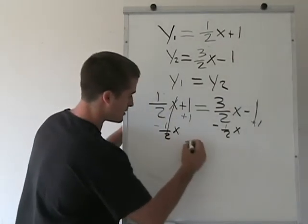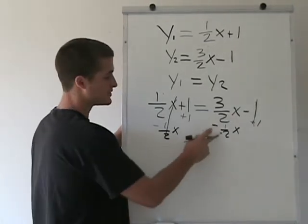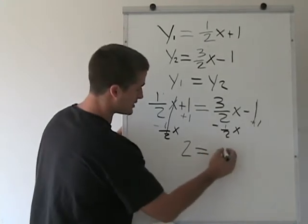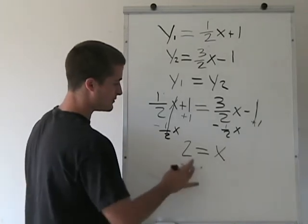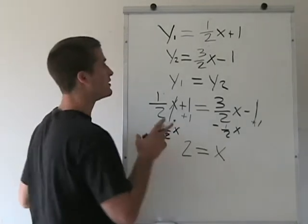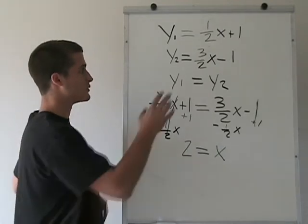1 plus 1 is going to be 2 equals 3 halves x minus 1 half x is just x. So it's 3 halves minus 1 half is 1. So you have 2 equals x. So now we know the x value where these two equations meet.